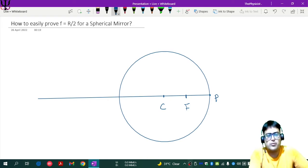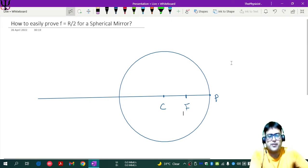So what do we know about spherical mirrors in physics? In physics, we know that incident rays parallel to the principal axis after reflection pass through the focus.